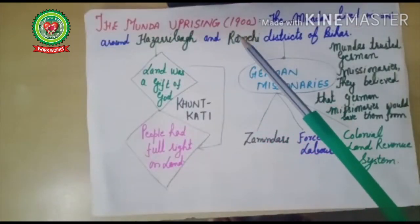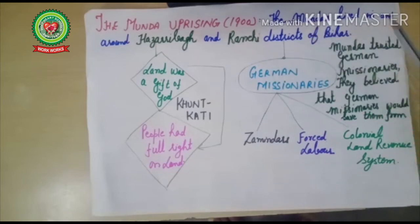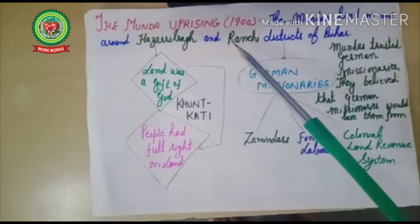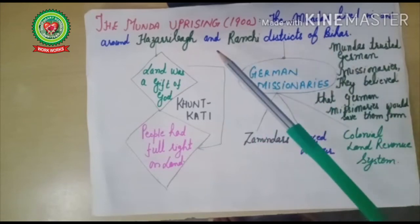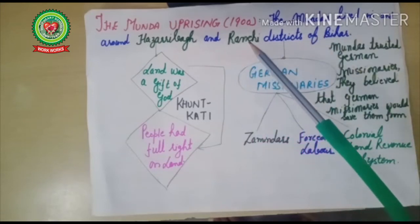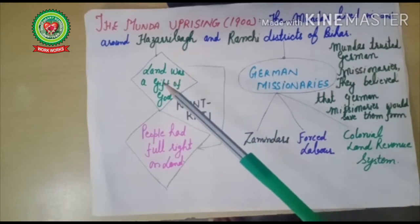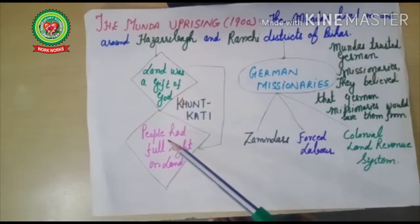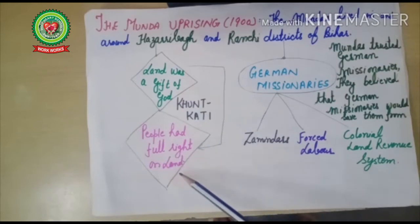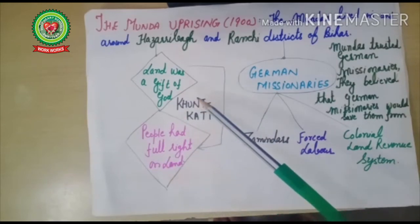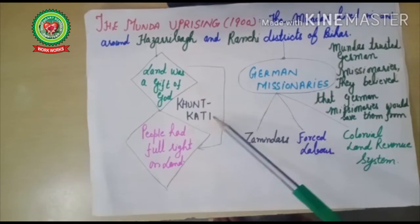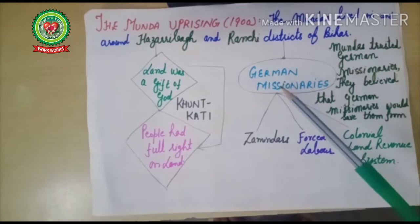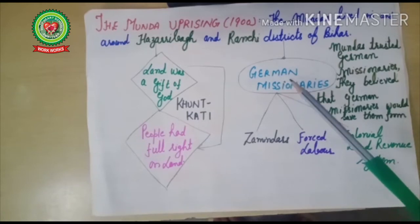The Munda Uprising took place in 1900. The Mundas lived in and around Hazaribagh and Ranchi districts of Bihar — they were a tribal community of Bihar. They believed that land was a gift of God, so people had full right on the land, and they developed their own land ownership system called Kundkati.